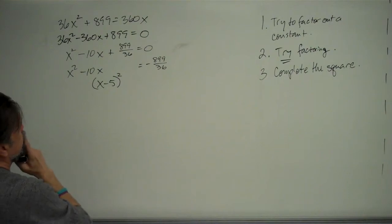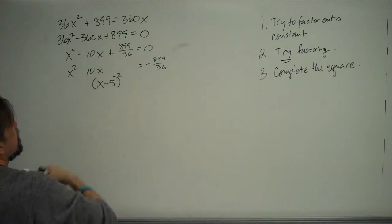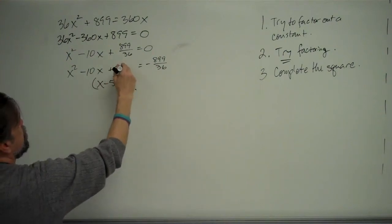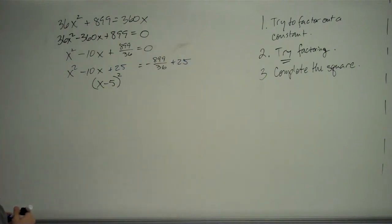Well, x minus 5 squared is x squared minus 10x plus this thing squared. So that means I'm going to add a 25 here. And whatever you do to the left side, you've got to do to the right side. Add a 25 over there.